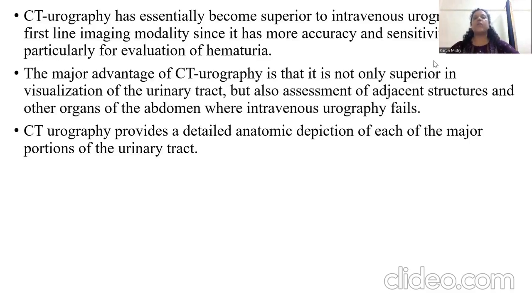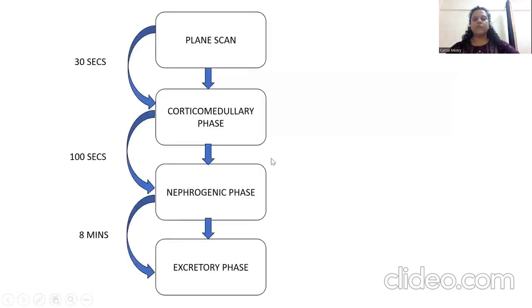CT urography provides a detailed anatomical depiction of each of the major portions of the urinary tract. These are the phases used for CT urography. First, we take a plain scan. Then after 30 seconds of contrast injection, we take a corticomedullary phase. After 100 seconds of contrast injection, we take the nephrogenic phase, and after 8 minutes we take the excretory phase.